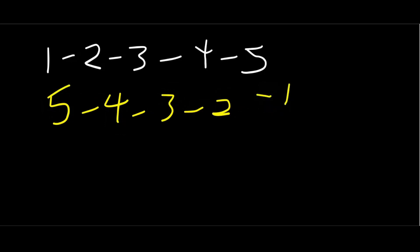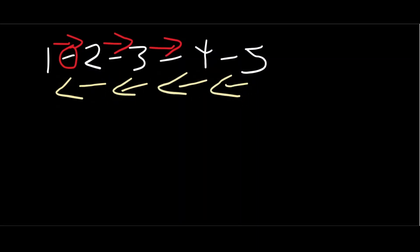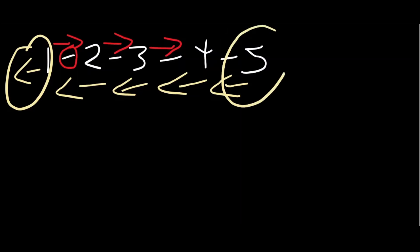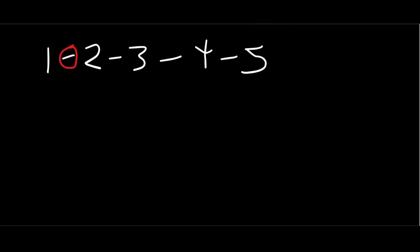One way we can solve this is to use a two-pointer method. What do we really want to do? We want to change the direction of these pointers. Currently one is pointing to two, two is pointing to three, three is pointing to four, and so on. We want to reverse these pointers such that two points to one, three points to two, four points to three, five points to four, and one points to none. This way none becomes the tail and five becomes the head. This question is really a pointer manipulation problem.